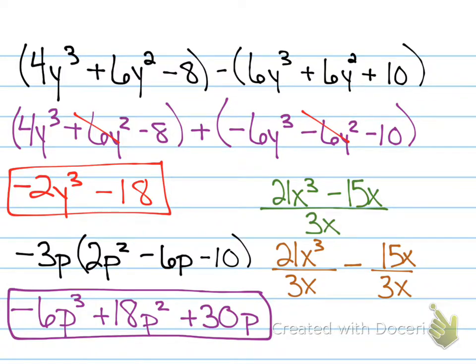Alright, now you can simplify each term. 21 divided by 3 is 7. And then you subtract your x's and you get x squared minus 5. Do I have an x? Why? Because 1 minus 1 cancels it out to 0. So, 7x squared minus 5.